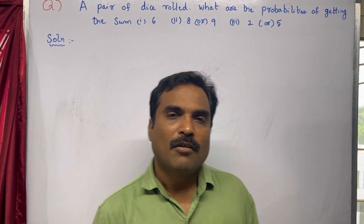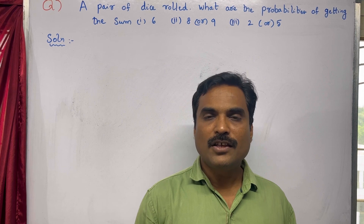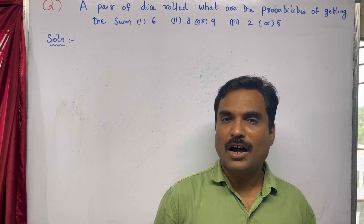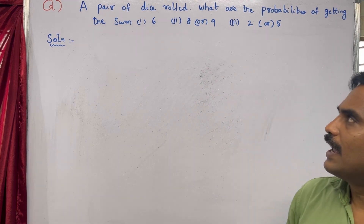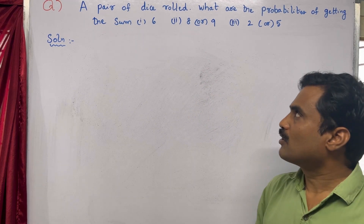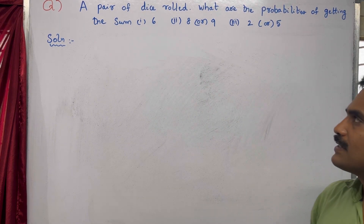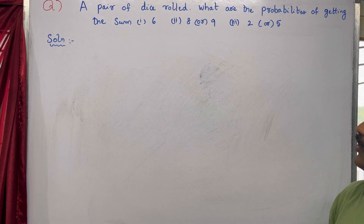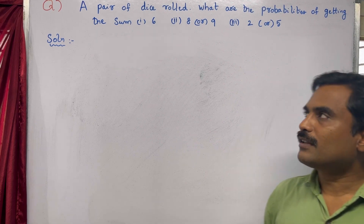Hi friends, welcome to my channel. In this new video I am going to solve a mathematical problem under the topic probability. The problem is: a pair of dice is rolled. What are the probabilities of getting the sum 6, second one is 8 or 9, and third one is 2 or 5?